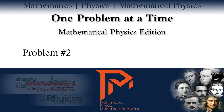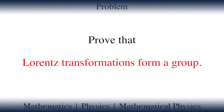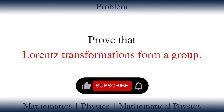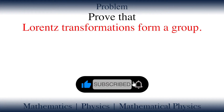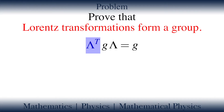Here is the second problem in which we show that the Lorentz transformations form a group. Today our job is to prove that the Lorentz transformations form a group. Remember that the Lorentz transformations are characterized by this relation, meaning Lorentz transformations preserve the Minkowski metric. In this relation, lambda is a representation of the Lorentz transformation, lambda superscript t means transpose of the Lorentz transformation, and g is the Minkowski metric. We've proved this relation in the previous episode.